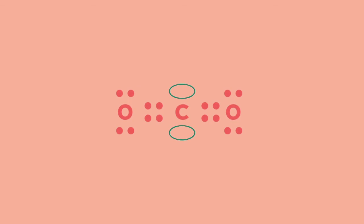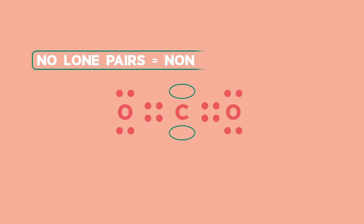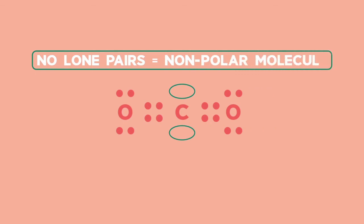If there is no lone pair around the central atom, the bonding pairs distribute themselves evenly, allowing the uneven electron distribution to cancel out.